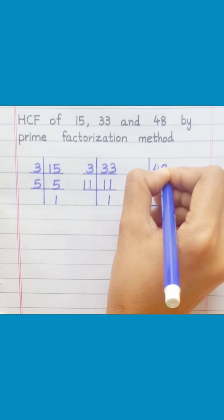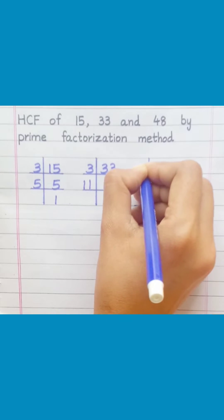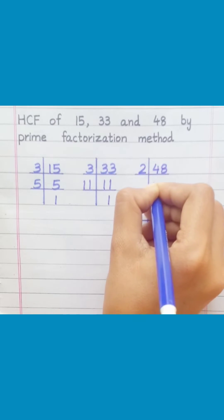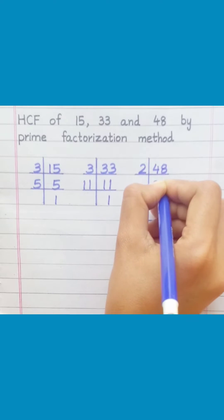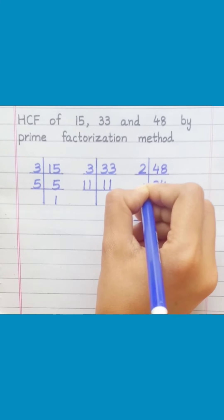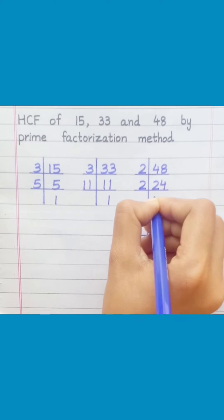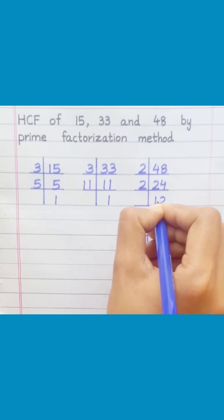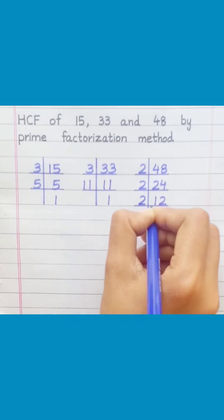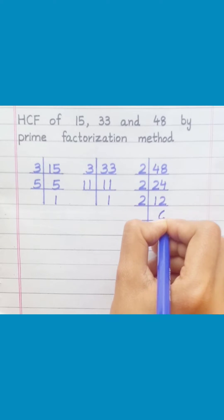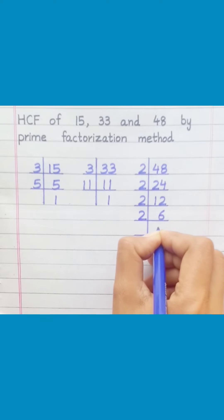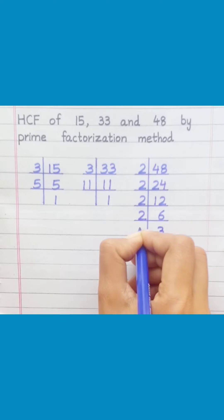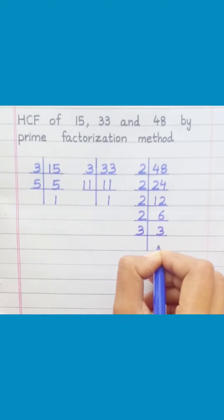48: 2 twos are 4, 2 fours are 8, 2 ones are 2, 2 twos are 4, 2 sixes are 12, 2 threes are 6, 3 ones are 3.